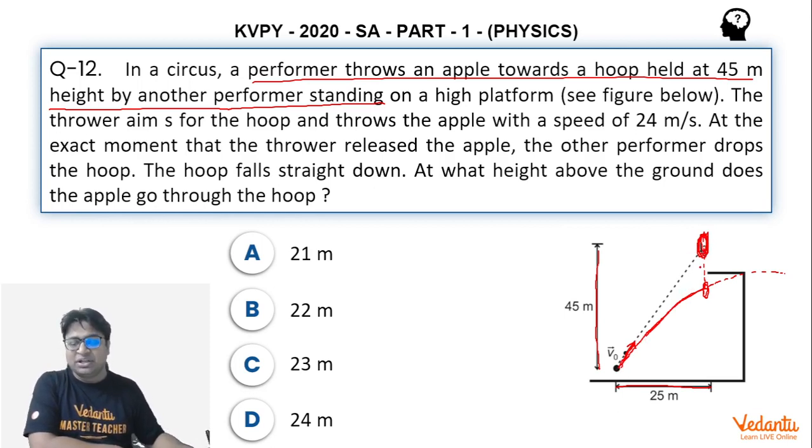This is what happens - you aim at something directly towards something, and if you shoot a bullet or if you throw the apple or the stone directly aiming at this body, if the body is released at that very instant then the two hit.